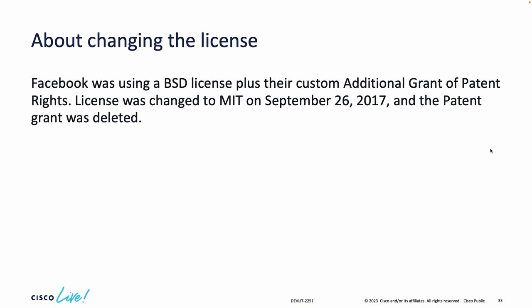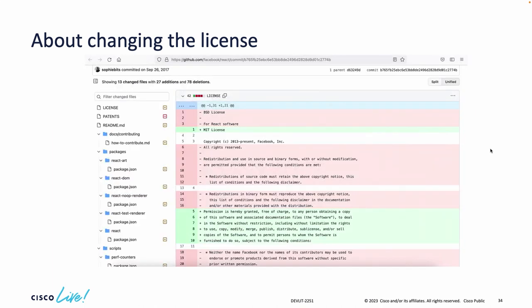Here is an example of a big open source project changing its license: Facebook was using a BSD license plus a custom additional grant of patent rights. Many commercial companies didn't want to use it because of special restrictions in that additional patent rights grant. The license was changed to MIT in September 2017 and the patent grant was deleted. You can see this in the relevant commit — it changed from BSD license to MIT license with related sections removed.